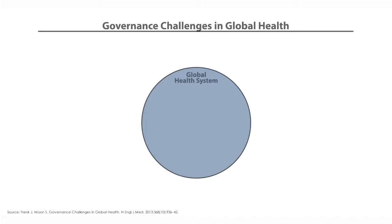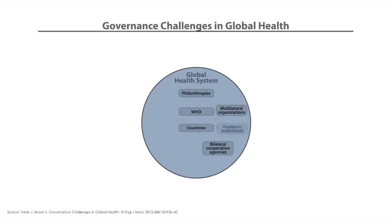We need a global health platform where countries and multiple groups representing different societal interests can work in concert. At the global level, apart from the World Health Organization and individual national governments, we have multilateral organizations providing technical or economic assistance, bilateral organizations establishing country-to-country collaborations, philanthropies playing a much larger role, academia, civil society organizations, the private sector, the media, and hybrid partnerships which often link some of these actors.